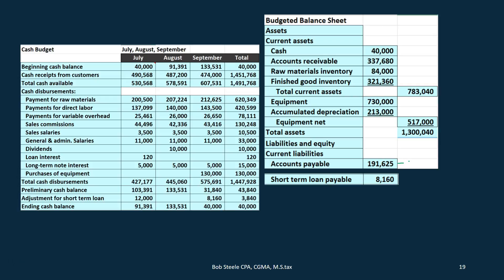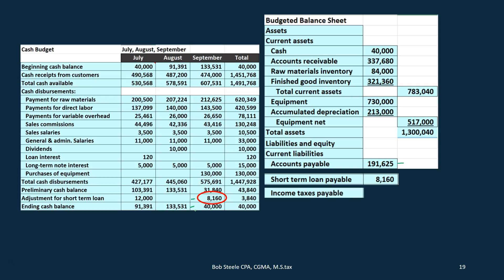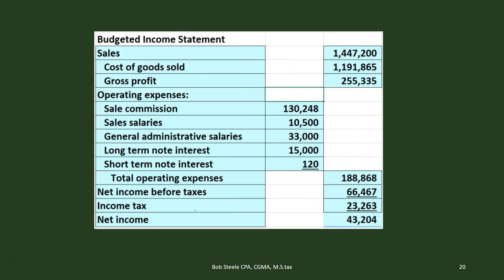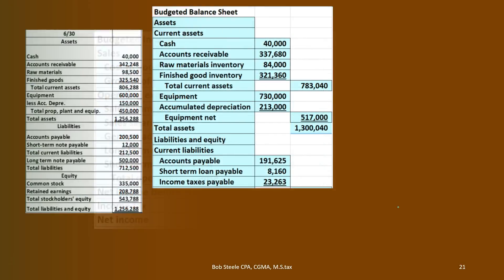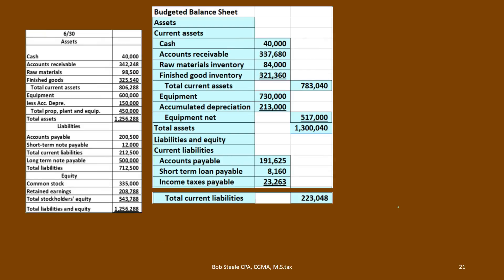Next we have the short-term loan payable of $8,160. We're going to take that from our cash budget because that loan is fluctuating — it's kind of like a line of credit. We needed it in order to get to our minimum balance of $40,000 in cash. Then we have income tax payable, which is going to come from the income statement — that's what's going to be owed for income taxes on the balance sheet at the end of this time period. Then we have the total current liabilities, which is the sum of accounts payable, the short-term loan, and income tax payable.